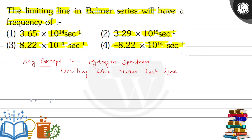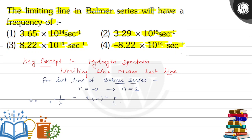Now for Balmer — Balmer ki jo last line hogi — for the last line of Balmer series, n₁ equals 2 and n₂ equals infinity. The formula is: 1/λ = R × Z² × (1/n₁² − 1/n₂²), where R is the Rydberg constant and Z is the atomic number.